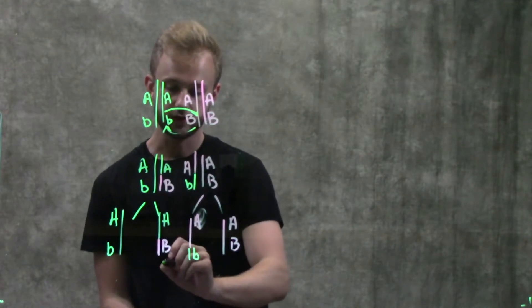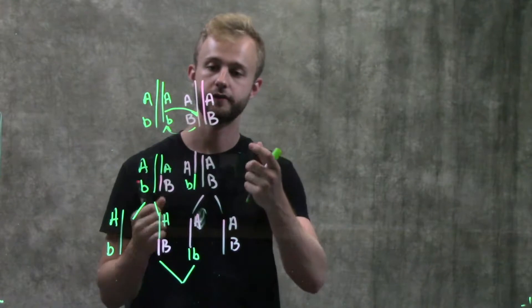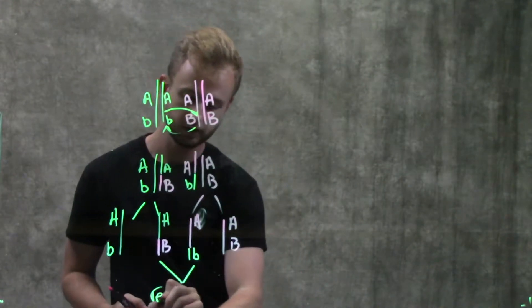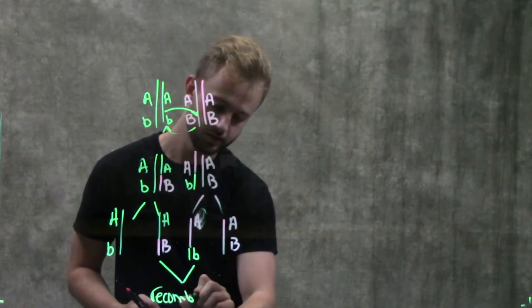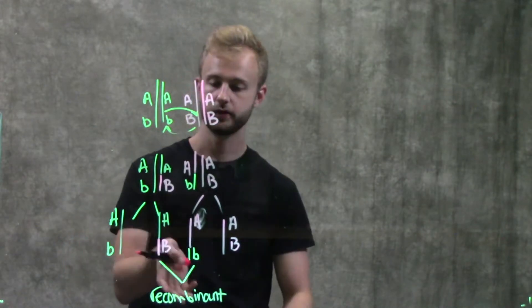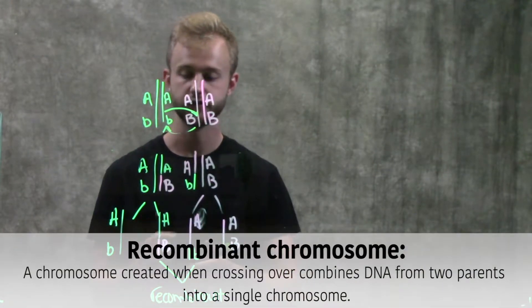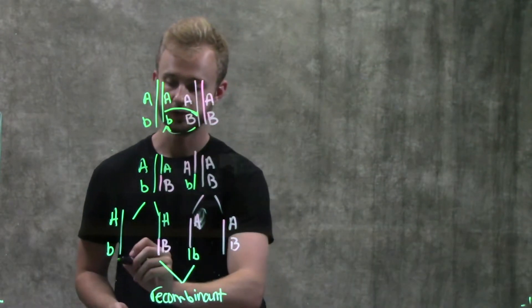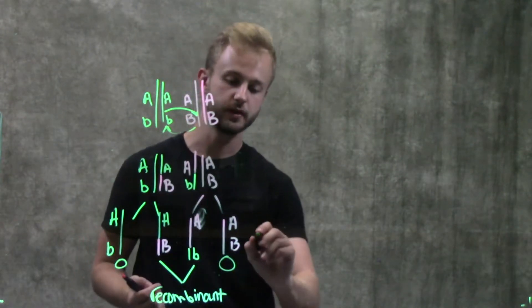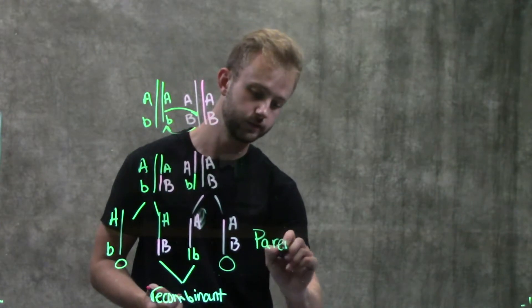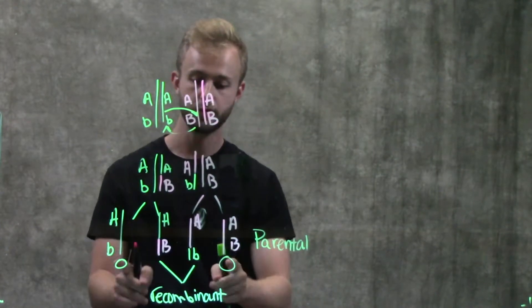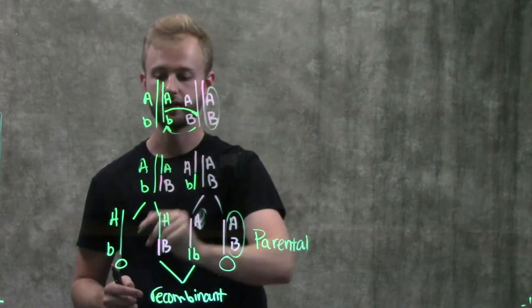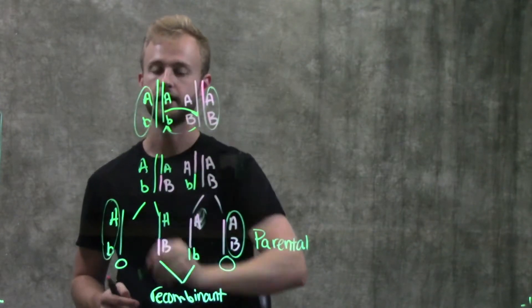We call these two in the middle that are a mixture of DNA from both of these chromosomes recombinant chromosomes, because they have genetic information from both the maternal and the paternal chromosomes. And then this one and this one are going to be parental genotypes because we can see both of these genotypes in one of the parents. We have this AB right here, then right there, and then again here and here.